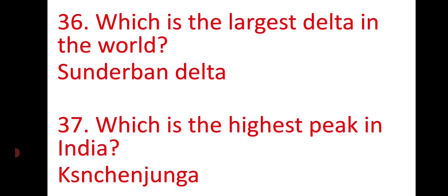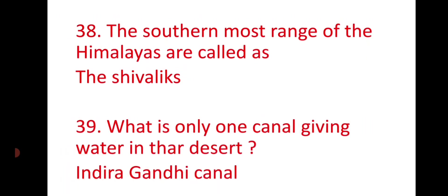Which is the highest peak in India? The highest peak in India is Kanchenjunga. The southernmost range of the Himalayas is called the Siwaliks. The only canal giving water in the Thar Desert is the Indira Gandhi Canal.